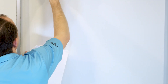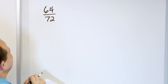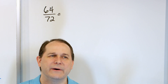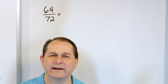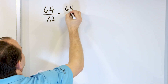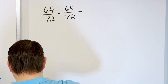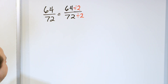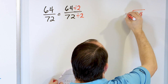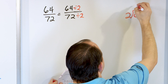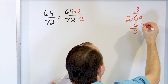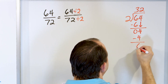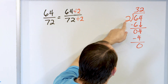Problem 6: 64/72. It's even and even, so let's divide by 2. Working through 64 divided by 2: 2 times 3 is 6, subtract to get 0, drag the 4 down, 2 times 2 is 4, remainder 0. So 64 divided by 2 is 32. Now 72 divided by 2: 2 times 3 is 6, subtract to get 1, drag the 2 down for 12, 2 times 6 is 12, remainder 0. So the answer is 36.